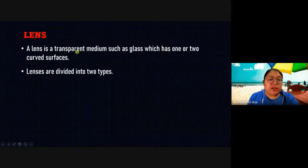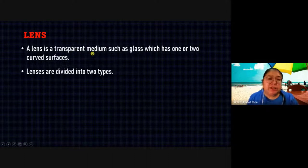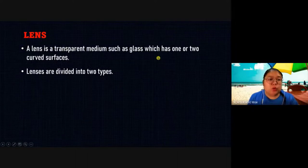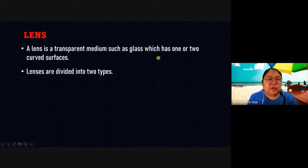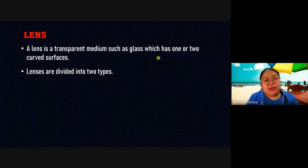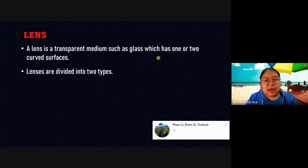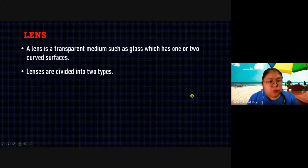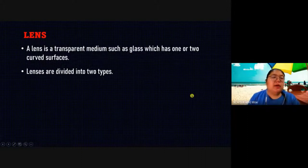A lens is a transparent medium, such as glass, which has one or two curved surfaces. That means the lens has at least one curved surface — two also can, one also can.